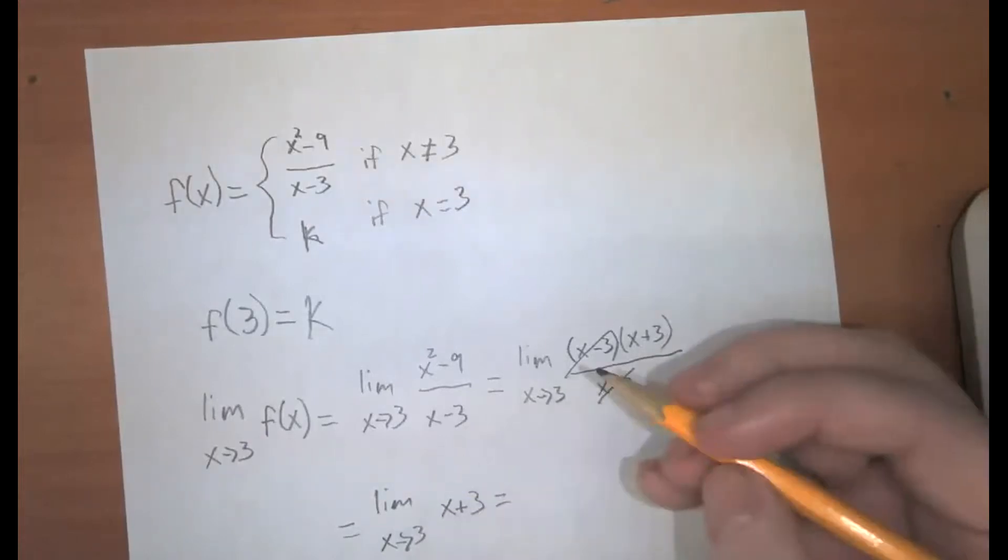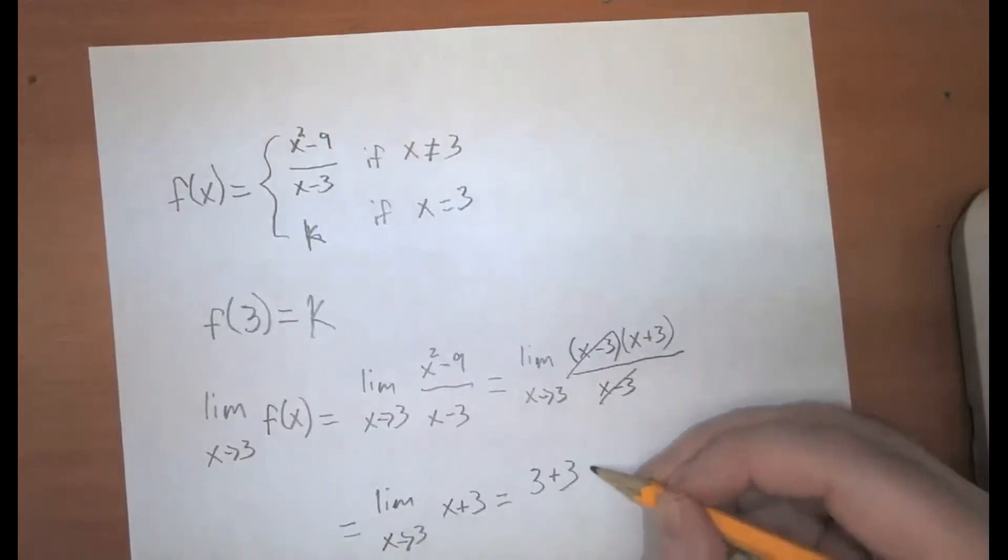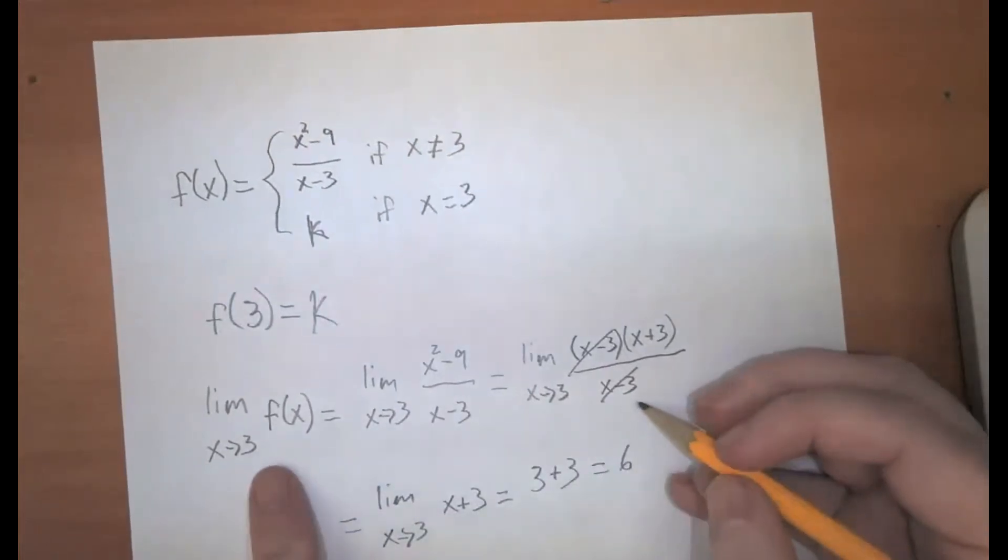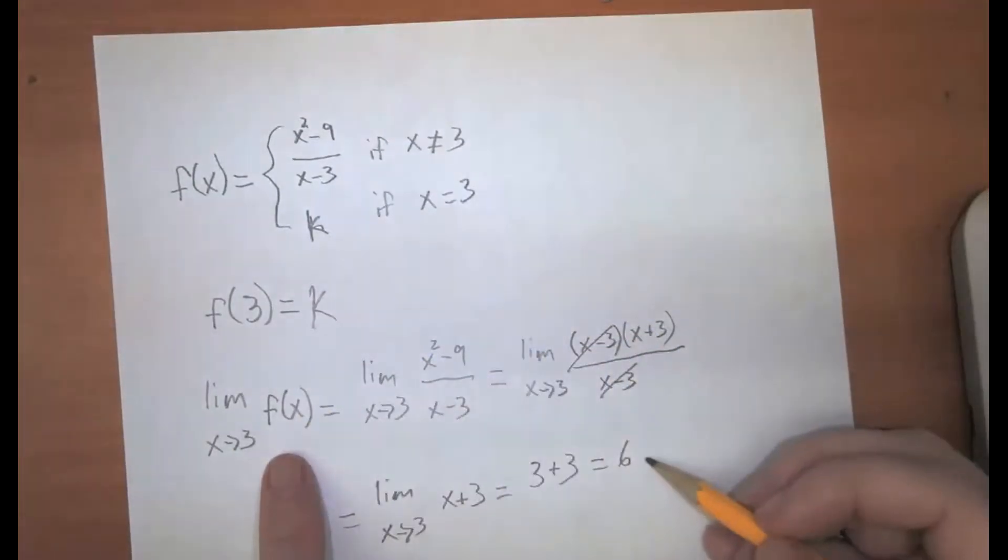And we can use rule 1 and substitute 3 for x. All right, so the limit as x approaches 3 of x plus 3 is equal to 6.